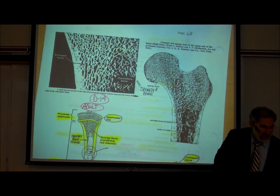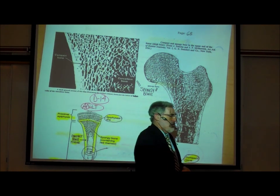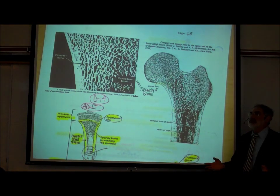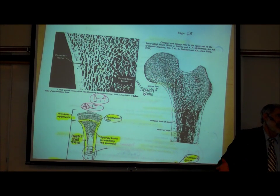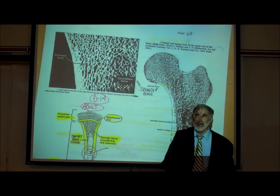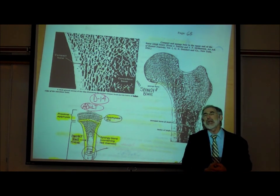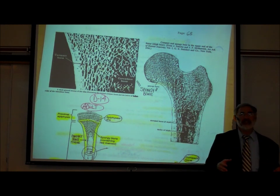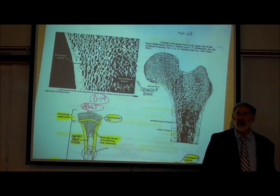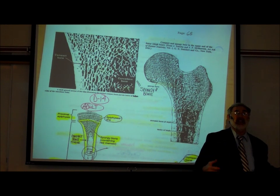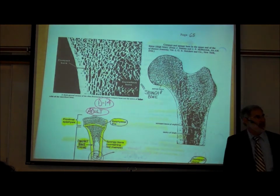An obvious question is: why isn't our femur made entirely of strong compact bone? Our bones are already more than adequately strong — most of us have never broken a bone, and even when broken they heal. If our bones were entirely compact bone tissue, they would weigh so much more that they would impair our ability to run and jump. The spongy bone makes the bone lighter while still providing sufficient protection and strength.